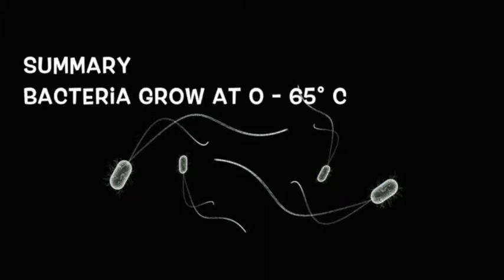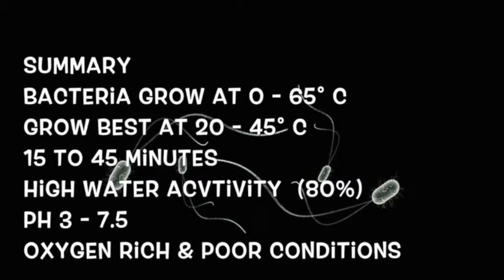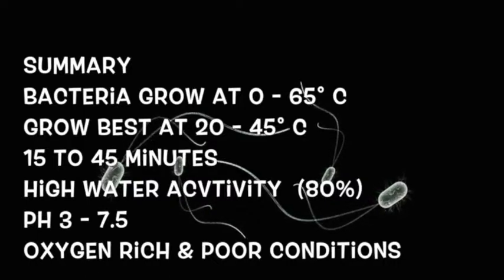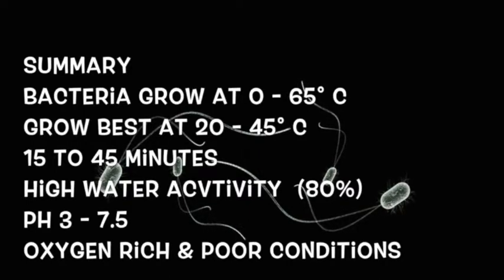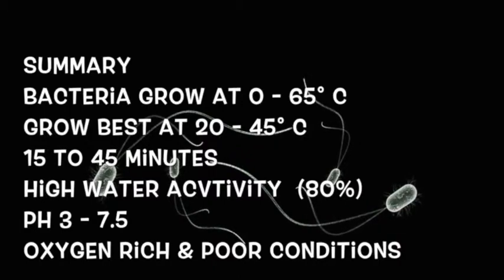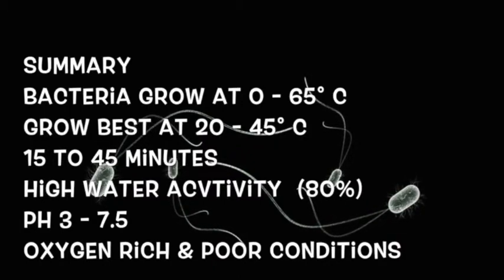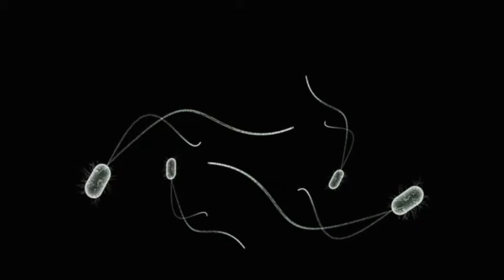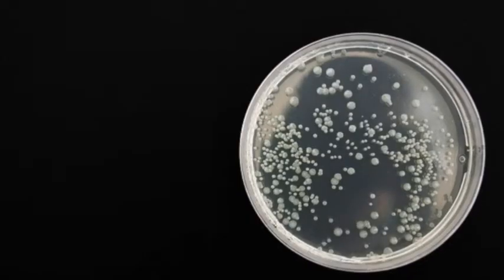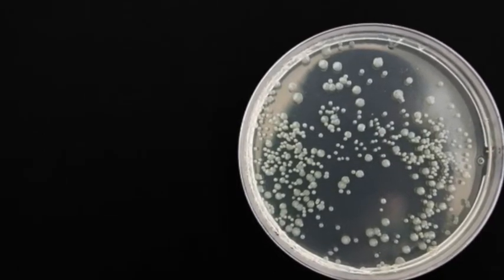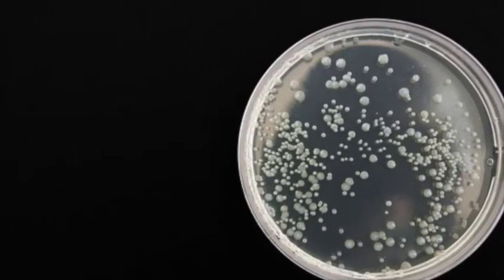Quick summary: bacteria grow and survive at temperatures between 0 to 65 degrees Celsius, but grow best at 20 to 45 degrees Celsius. They rapidly multiply every 15 to 45 minutes, and moisture-rich conditions are favorable. Bacteria can survive at a pH of between 3 and 7.5, and can survive in both oxygen-rich and poor conditions. As you can see, bacteria are quite similar to humans in what they need to survive, which is why bacteria associated with humans grow in the food that we consume.